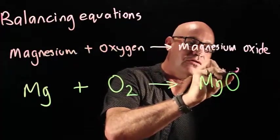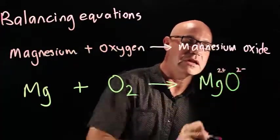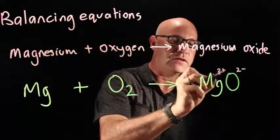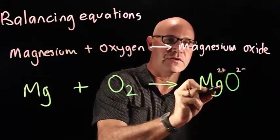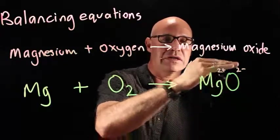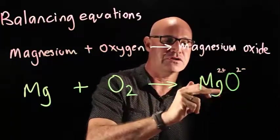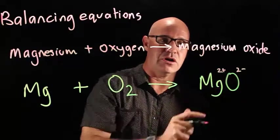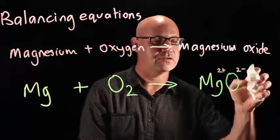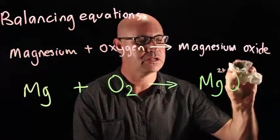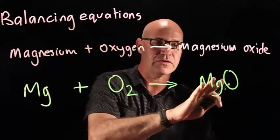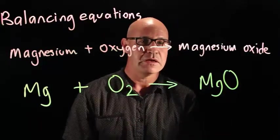Oxygen is 2-. So when we cross these over, this two goes down here and this two goes down there. Remember it's a ratio so we can simplify that and just make it MgO. So we don't actually have to change anything with the subscripts on this one.